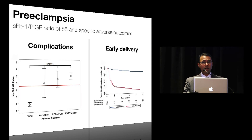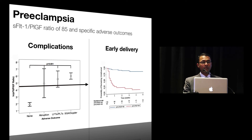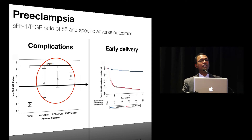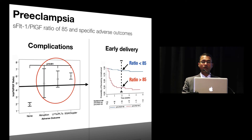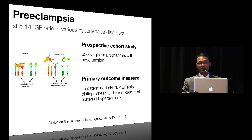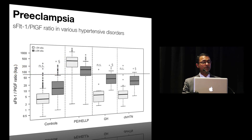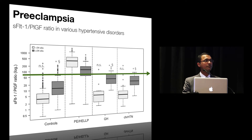The authors also plotted the ratio against specific complications such as abruption, altered liver function tests, and abnormal dopplers, and a ratio of 85 clearly distinguished patients who had these complications from those who did not. When Kaplan-Meier survival curves were plotted, almost 85% of those with a ratio greater than 85 delivered within two weeks compared to only about 15% in those with a ratio less than 85. A similar study characterized the ratios in different types of hypertensive disorders of pregnancy, and a ratio of more than 85 clearly separated patients with preeclampsia from other types of hypertensive disorders, suggesting this ratio can stratify hypertensive disorders with reasonable precision.